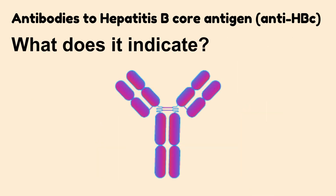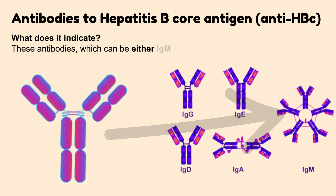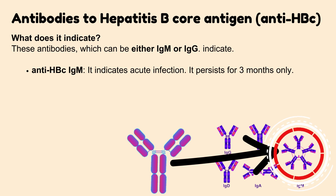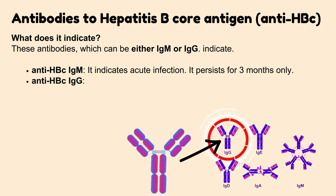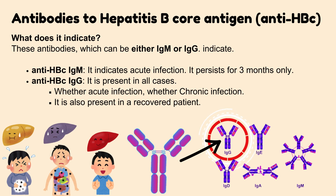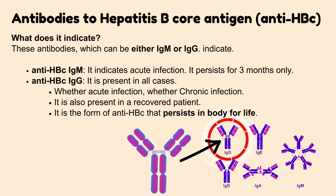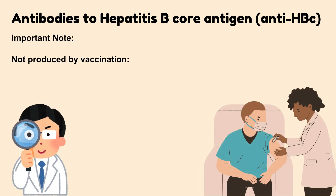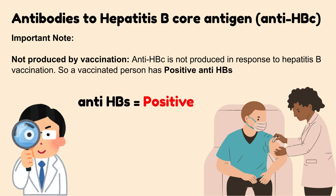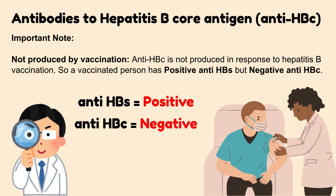Anti-HBc antibodies can be either IgM or IgG. Hepatitis B core antibody IgM indicates acute infection and persists for 3 months only. Hepatitis B core antibody IgG is present in all cases — whether acute infection, chronic infection, or in a recovered patient — and is the form that persists in the body for life. Important note: hepatitis B core antibody is not produced in response to hepatitis B vaccination. So a vaccinated person has positive hepatitis B surface antibody but negative hepatitis B core antibody.